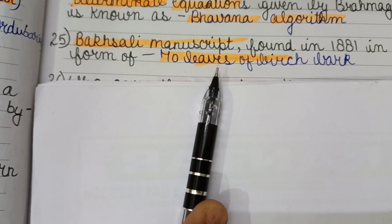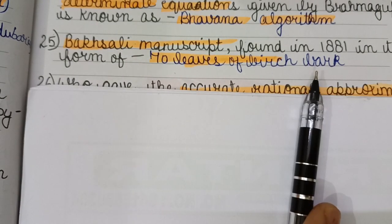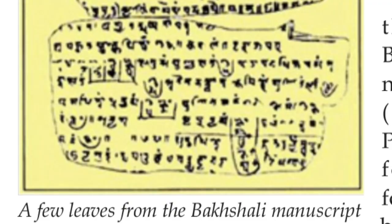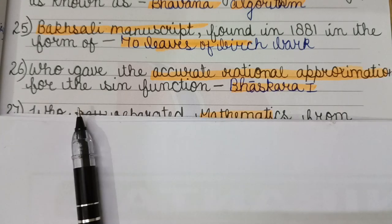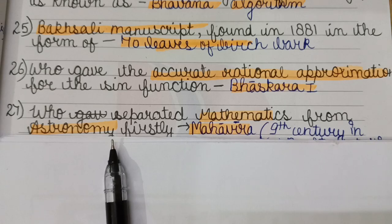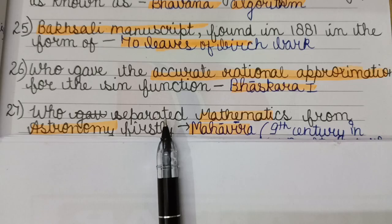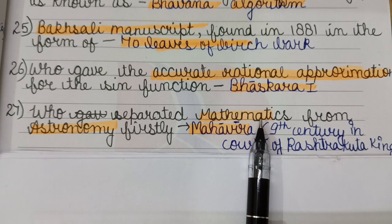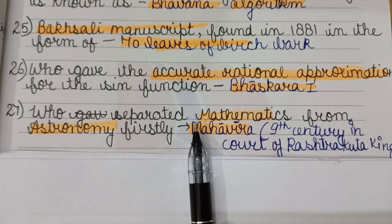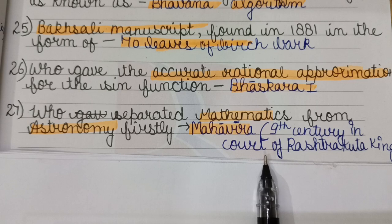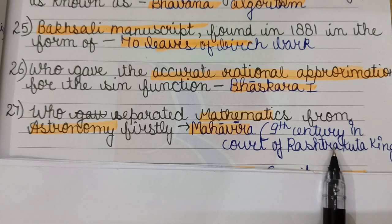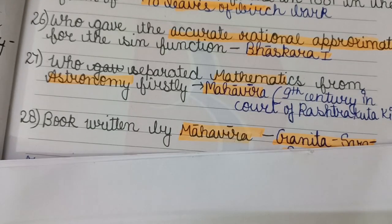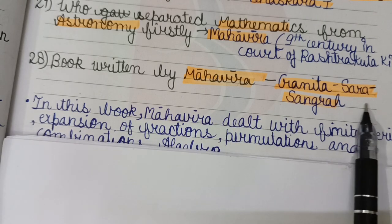The Bakshali manuscript was found in 1881 in the form of 70 leaves; Bakshali is a place now located in Pakistan. Bhaskara I gave an accurate rational approximation for the sine function. Mahavira, in the 9th century and a member of the court of the Rashtrakuta king, was the first to separate mathematics from astronomy. His important book is the Ganitasarasangraha.